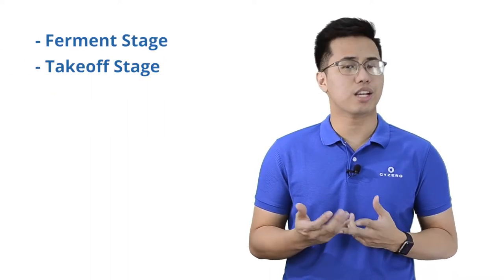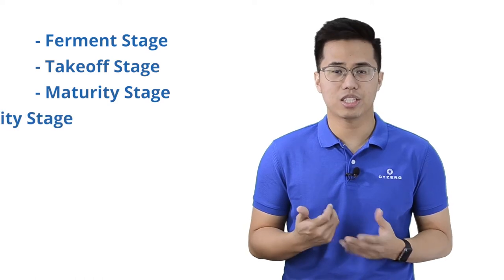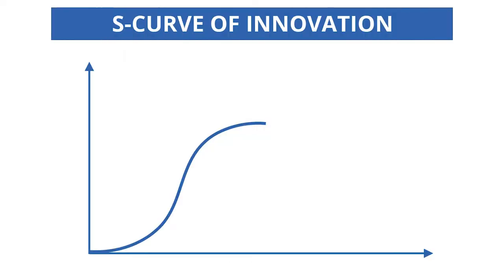First, the S-curve of innovation. This concept enables you to determine how mature a specific technology is. These stages include ferment stage, takeoff stage, maturity stage, and discontinuity stage. The S-curve is wrapped by a technology's performance in relation to time, and each stage is characterized as follows.